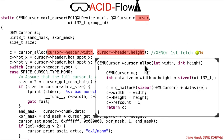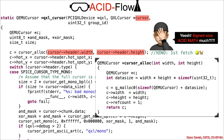If we look at the definition of cursor_alloc, we have signed integers for width and height, and some acid math — yes, there is a lot of attacker-influenced math going on here. That's not good. But this is not the integer overflow section; we'll come back to that later because it's not necessary to exploit the double-fetch vulnerability here.